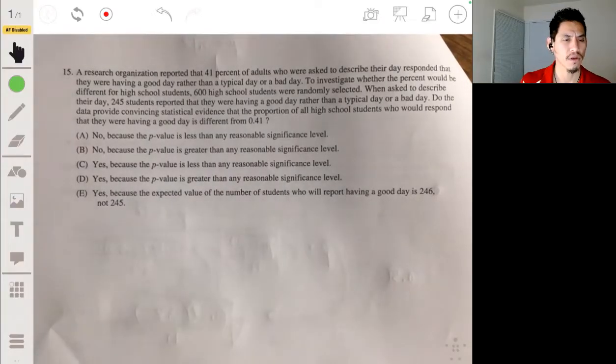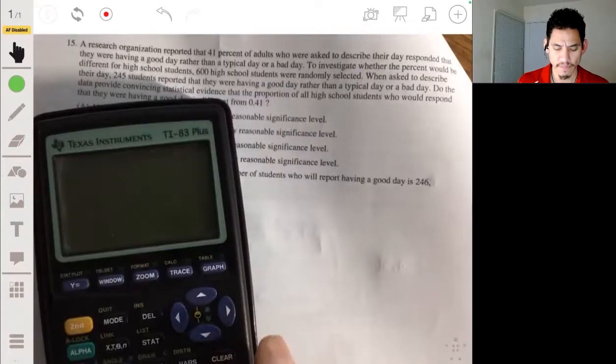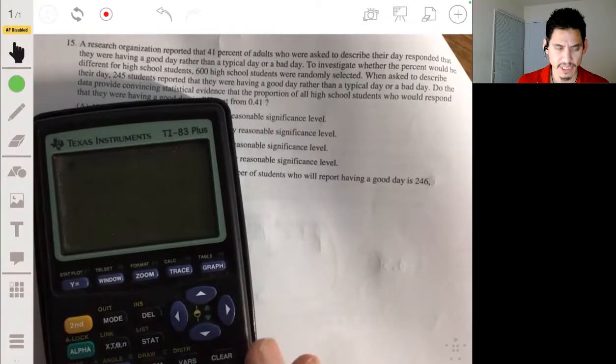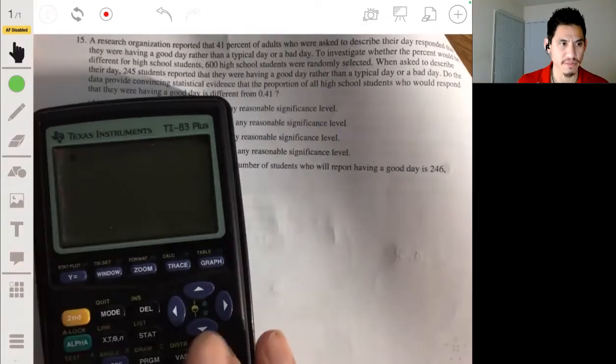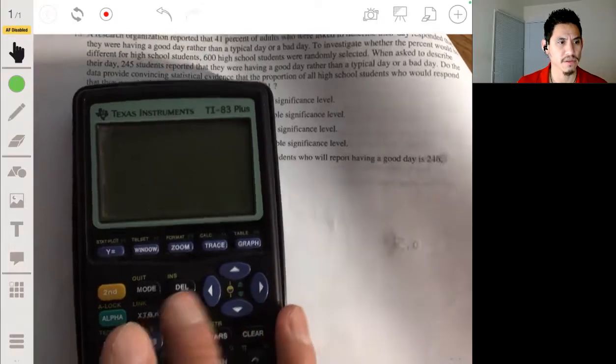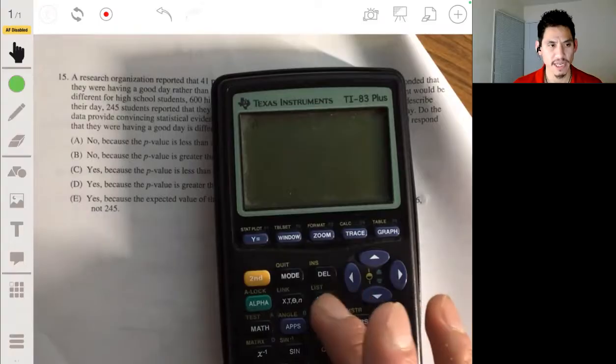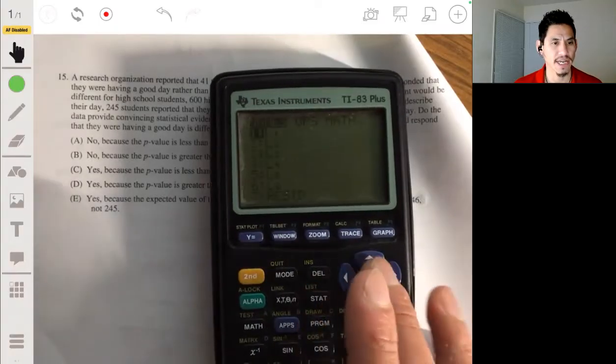When asked to describe their day, 245 students reported that they were having a good day rather than a typical day or a bad day. The data provided convincing statistical evidence that the proportion of all high school students who would respond that they were having a good day is different from 0.41. You can actually do a test, a significance test for difference in proportions, and you can run this in your calculator.